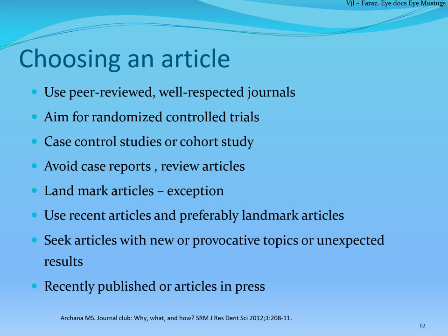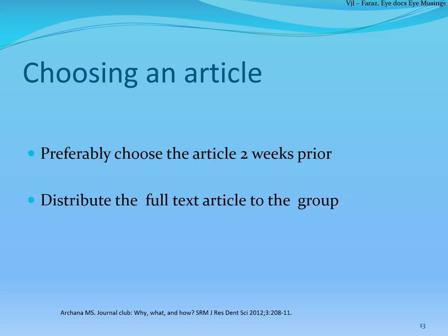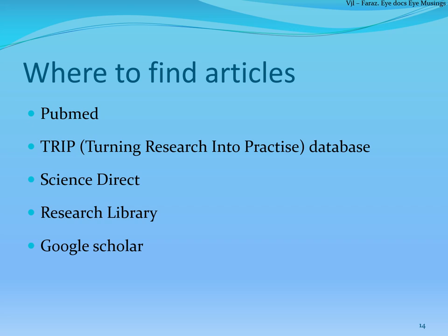Aim for randomized controlled trials, otherwise case-control or cohort studies. Try to take recently published articles or articles in press. Landmark articles can be an exception since they are still the basis for present clinical practices. It is important to choose articles two weeks prior to your journal club presentation and distribute the full text to the group including your colleagues and teachers. You can search for articles on PubMed or the TRIP database, which also provides the level of evidence so you can decide if the paper suits your JC.